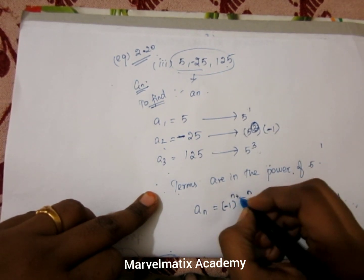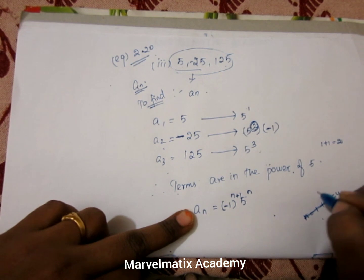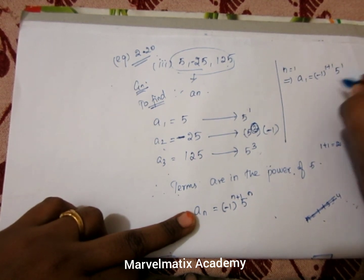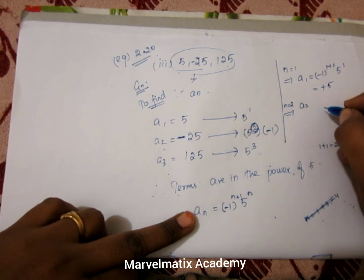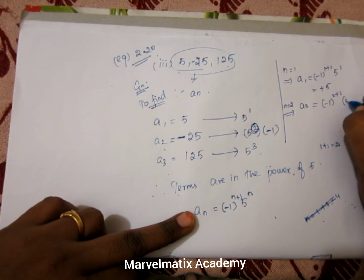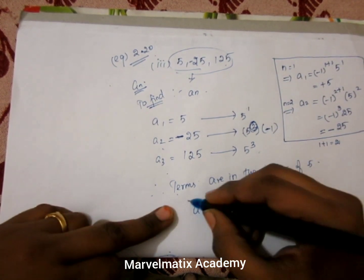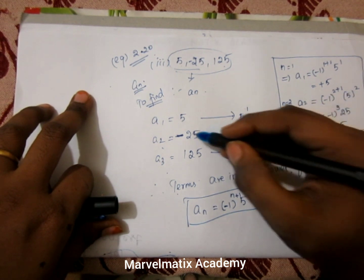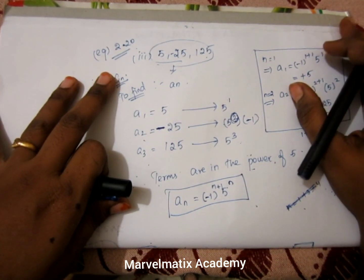The minus sign pattern means we can adjust using (−1)^n. Since minus 1 to an even power is positive and to an odd power gives minus, we can write the general term incorporating (−1)^n multiplied by 5^n. Keep supporting Moralmatics Academy. Learn max by doing max. Thank you.